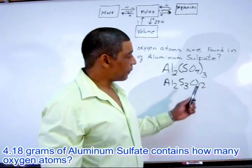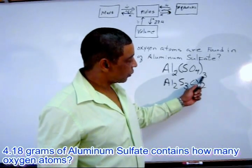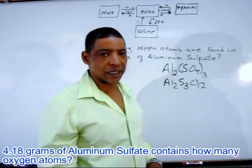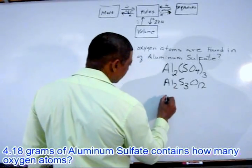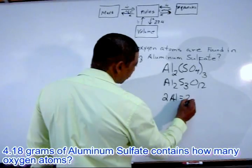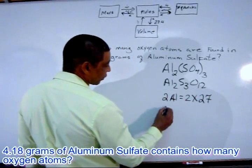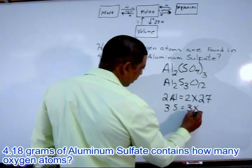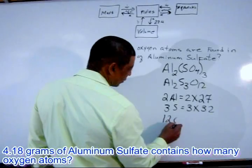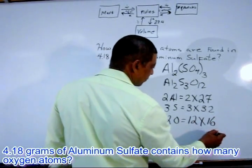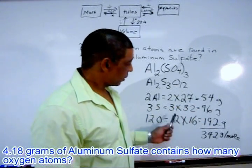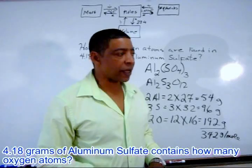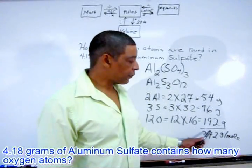With the distributed formula Al₂S₃O₁₂, we have 2 aluminums — 2 times 27 — 3 sulfurs — 3 times 32 — and 12 oxygens — 12 times 16. That gives us 54 plus 96 plus 192, so the gram formula mass for this compound is 342 grams per mole.